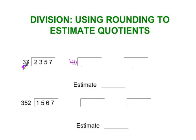Since I rounded this to the tens place, I'm also going to round the dividend to the tens place. Whatever place you round the outside number — the divisor — you always round the dividend to that same place. That's where some of you are messing up: rounding one to the tens place and the other to the hundreds place. You can't do that. You have to round them both to the same place.